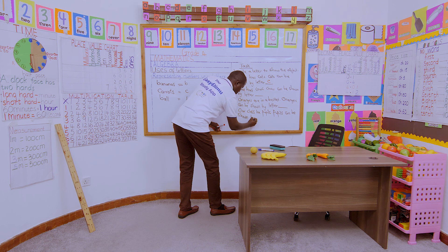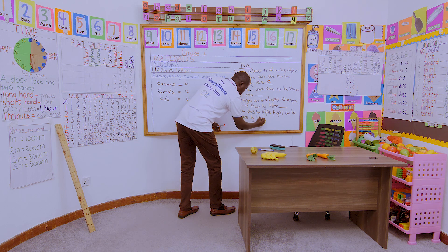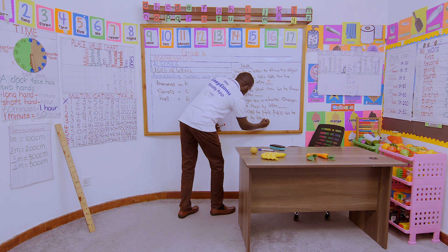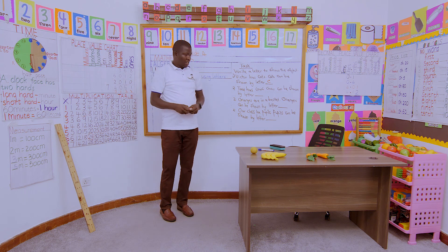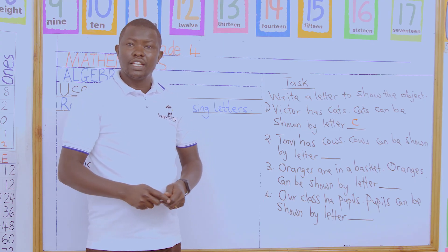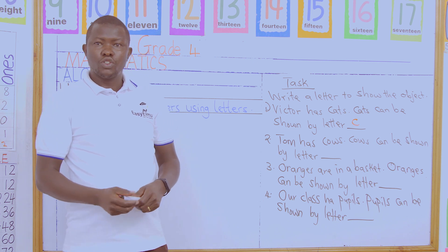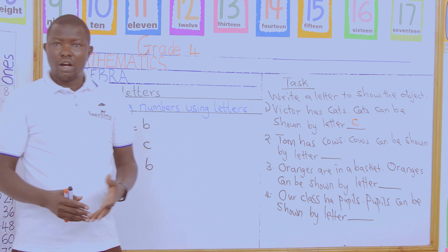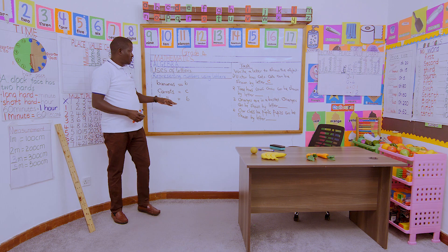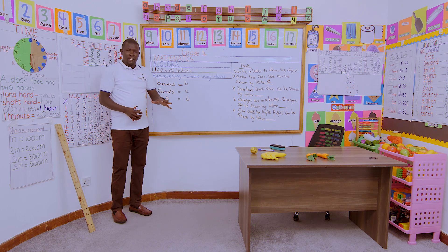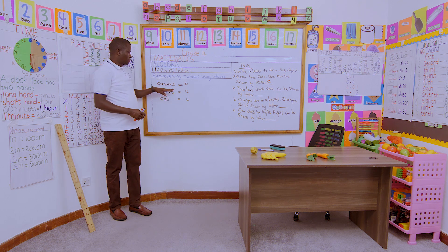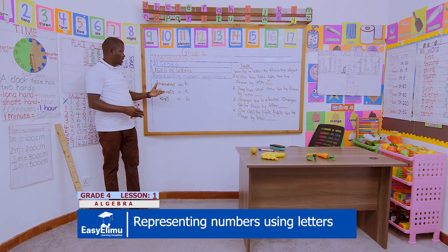Which letter can you use to show pupils? Learners, these are our tasks for today, as we learn how to use letters to represent an object or an unknown number of objects. For example, we had bananas — we use letter B, so we say John has B bananas.